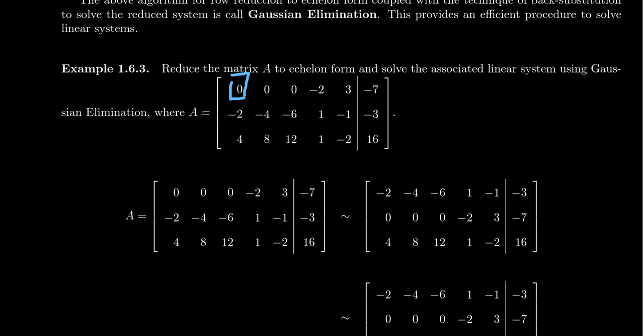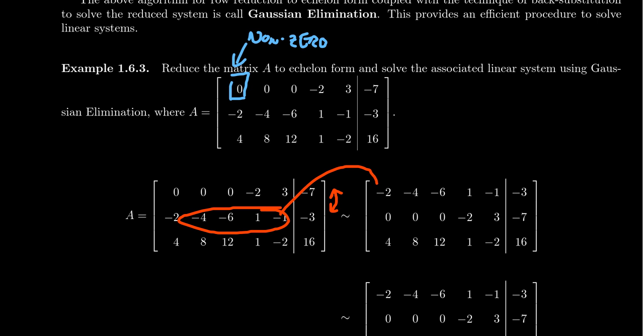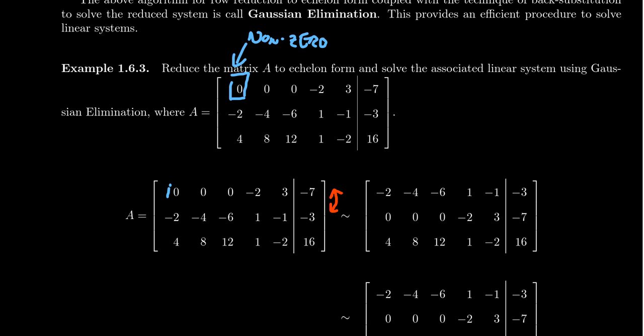Here we get a zero in the pivot position. For our pivot, we need something non-zero there. This is why we were looking for the leftmost non-zero column. In order to get something non-zero in that zero position, typically you're going to want to do an interchange — just swap the zero row with something non-zero below it. So let's take the first two rows and interchange them: row two comes up and becomes row one, and row one goes down and becomes row two. The pivot position didn't change, although the pivot entry does change based upon the interchange.